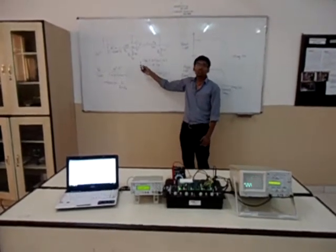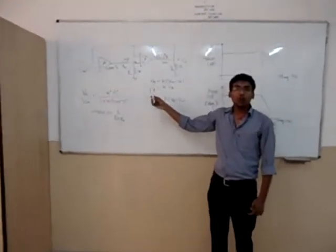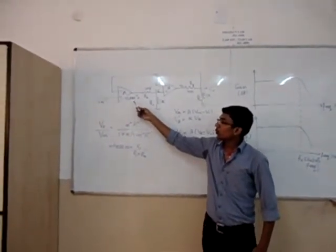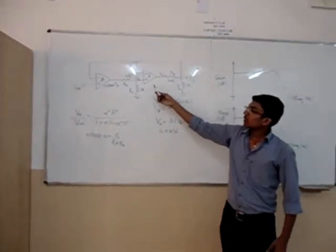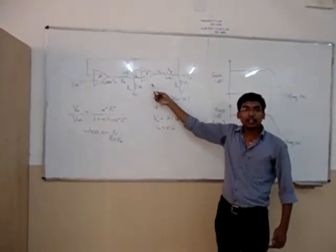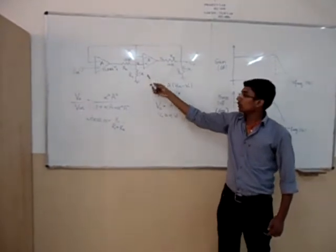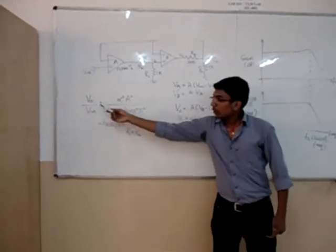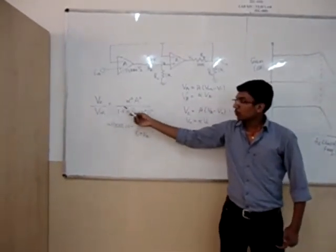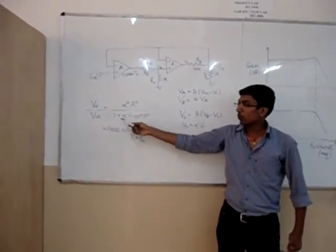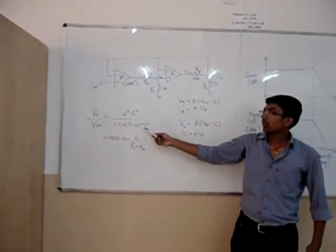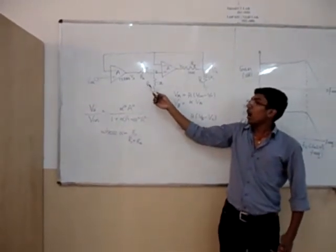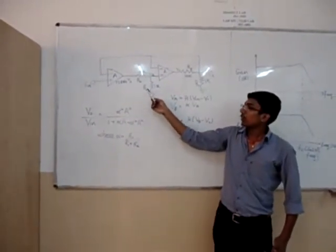We are provided with a problem in which there is second order low pass filter consisting of Unity gain opamp TL082 in loop with another Unity gain opamp TL082 serving as voltage buffer to the first. The transfer function of the system is V0 upon VE equal to alpha square A square upon 1 plus alpha A plus alpha square A square where alpha is the attenuation constant and is equal to R1 upon R1 plus R2.